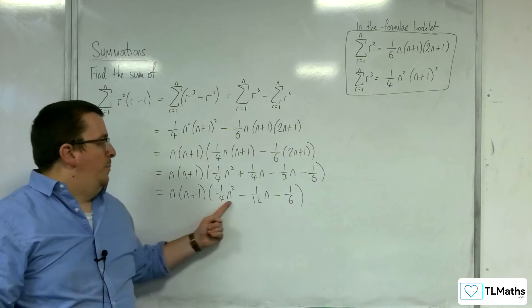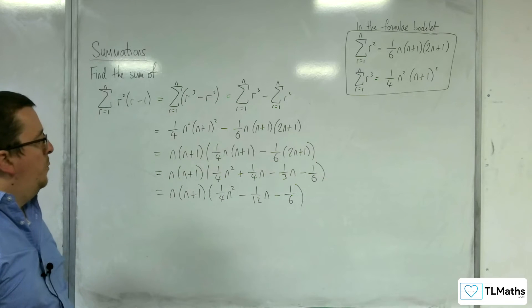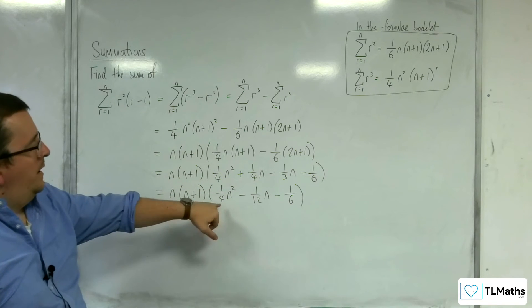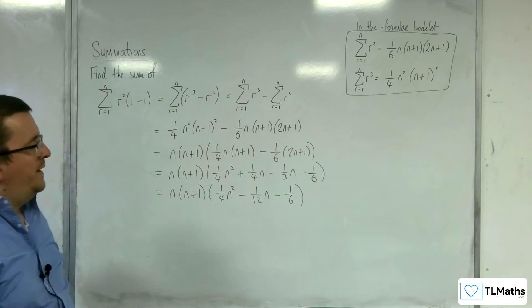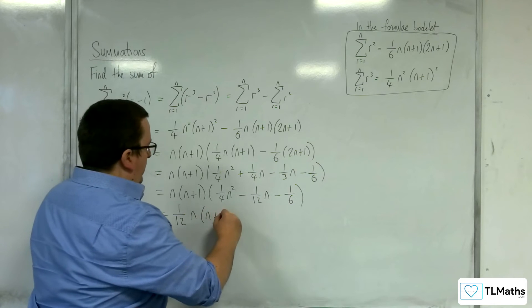So, now we want to pull out a fraction that's going to deal with all three of those. 12 would be, or 1 twelfth would be best because quarters and a sixth are factors of that. So, that will work out. 1 twelfth n, n plus 1.